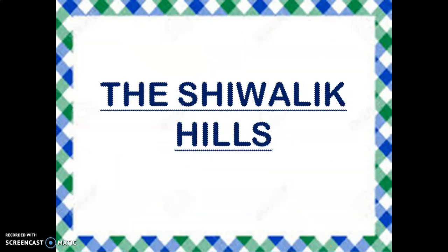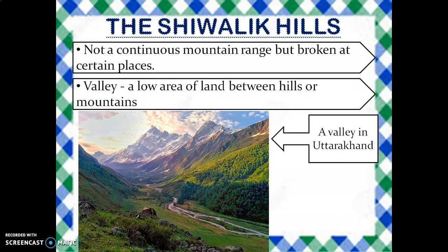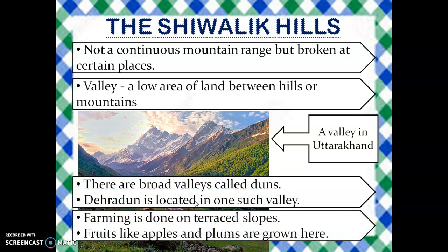Now we will study about Shivalik Hills. The Shivalik Hill is not a continuous mountain range but is broken at certain places. It lies to the south of the Middle Himalayas or Himachal Range, and its average height is 1,250 meters above sea level. There are many valleys in the Shivalik Hills. Valleys are low areas of land between hills or mountains. These valleys are also known as Doon, and Dehradun is also located in one such valley. Farming is done on terrace floors and fruits like apples and plums are grown here.